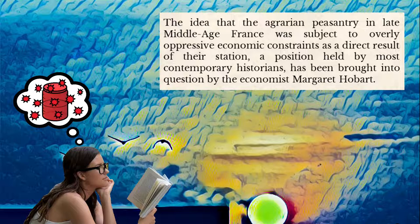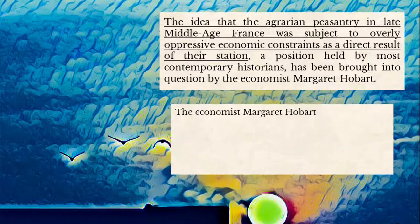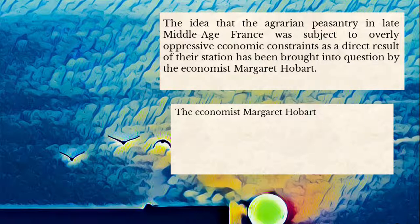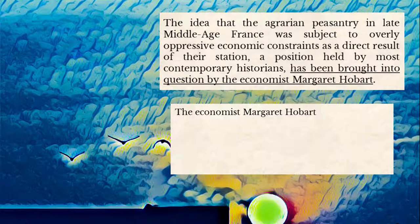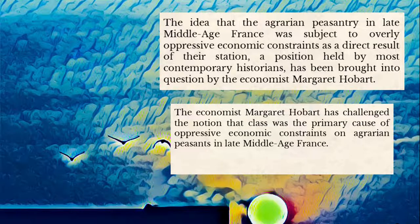So what are some ways we could improve this writing style? Let's start by fixing the three things we identified as cognitively taxing. First, instead of making a very long, abstract idea the subject of the sentence, I'm going to make the economist the subject. Next, that interrupting phrase — we can take it out for now. This will move the subject closer to its verb so the reader doesn't have to parse the sentence as hard. Third, that sloppy verb phrase — I'm going to use a more economical verb. Here's what those changes look like: 'The economist Margaret Hobart has challenged the notion that class was the primary cause of oppressive economic constraints on agrarian peasants in late middle-aged France.'